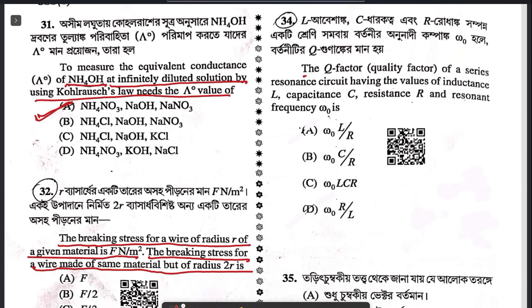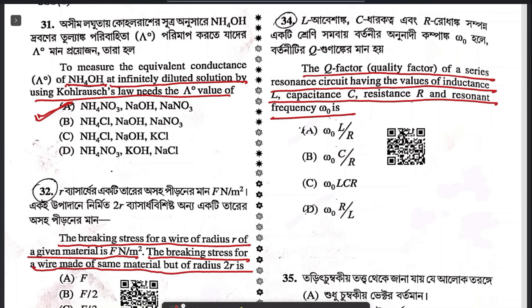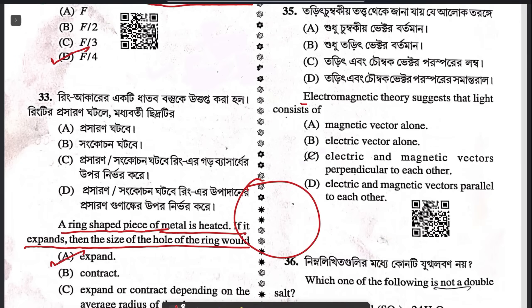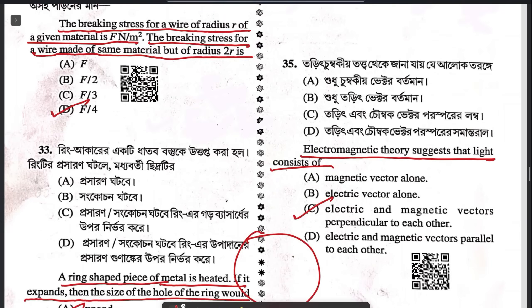Question 34: the quality factor (Q-factor) of a series resonance circuit with inductance L, capacitance C, resistance R, and resonance frequency ω — the only possible answer is A. Question 35: electromagnetic theory states that light consists of electric and magnetic fields which are perpendicular to each other. The answer is C.